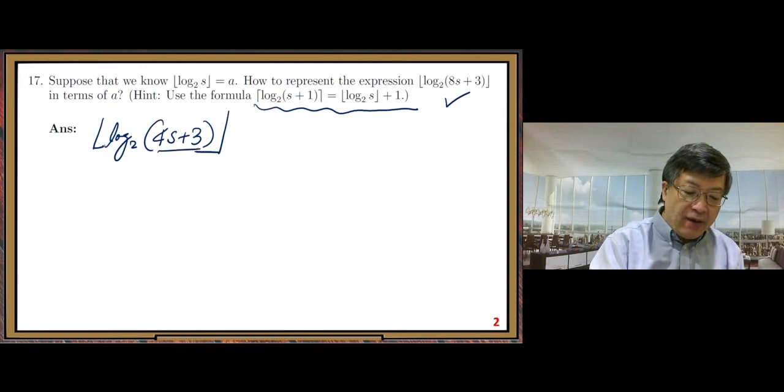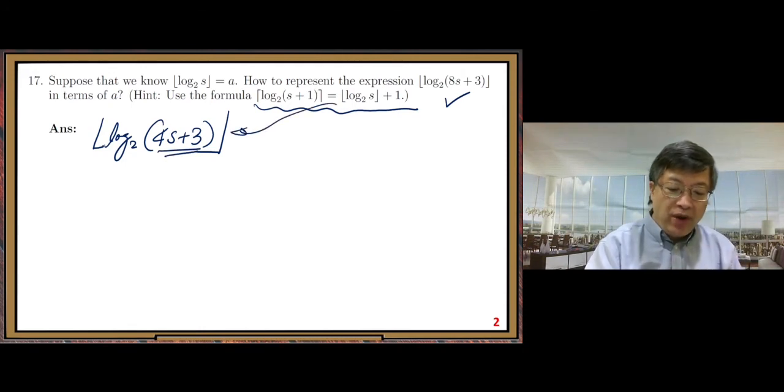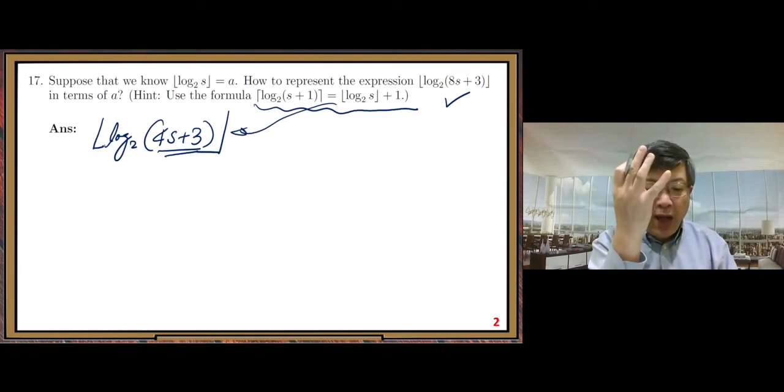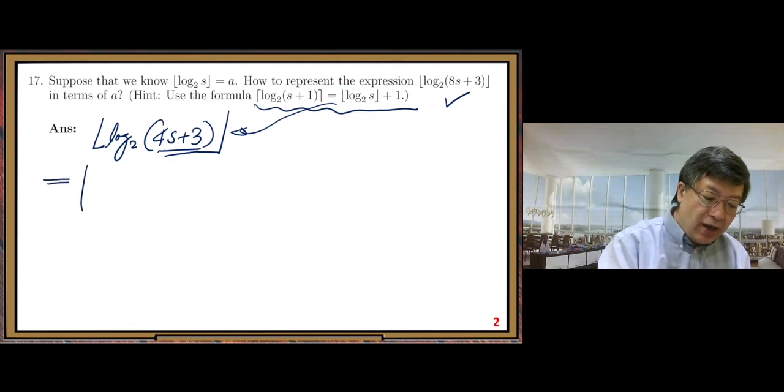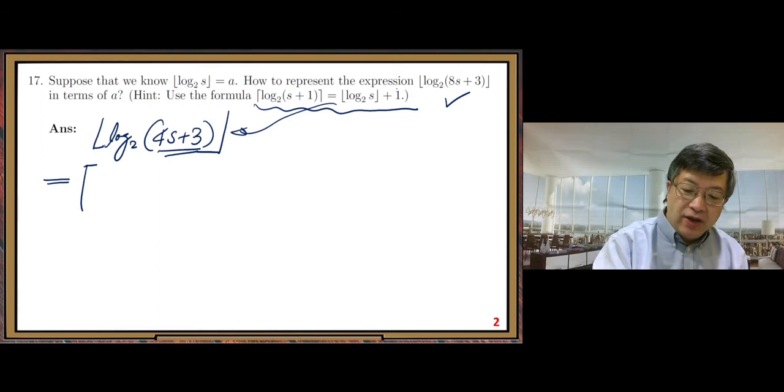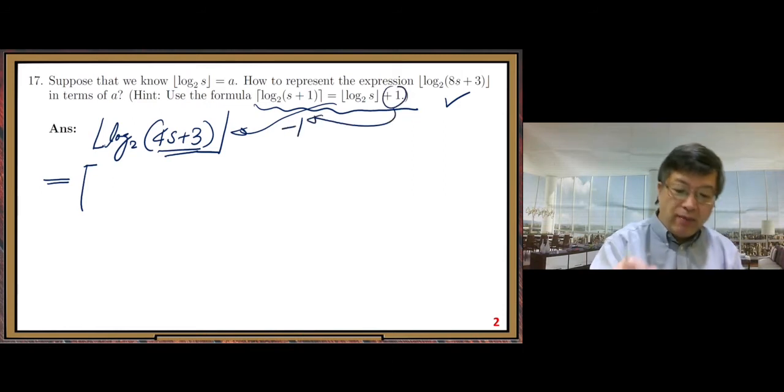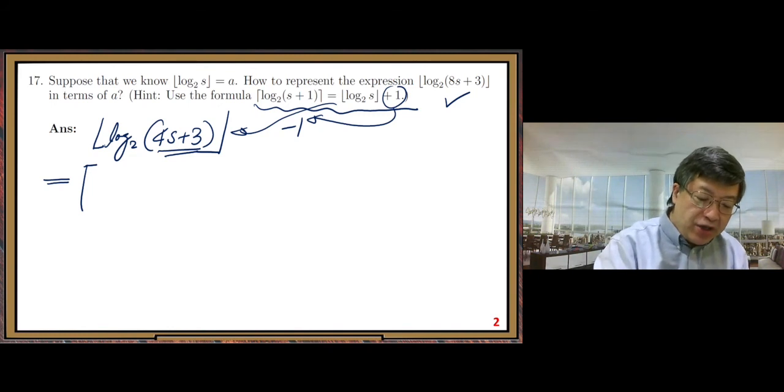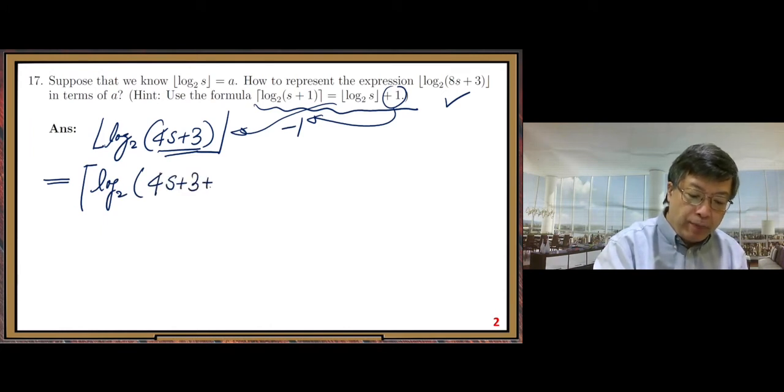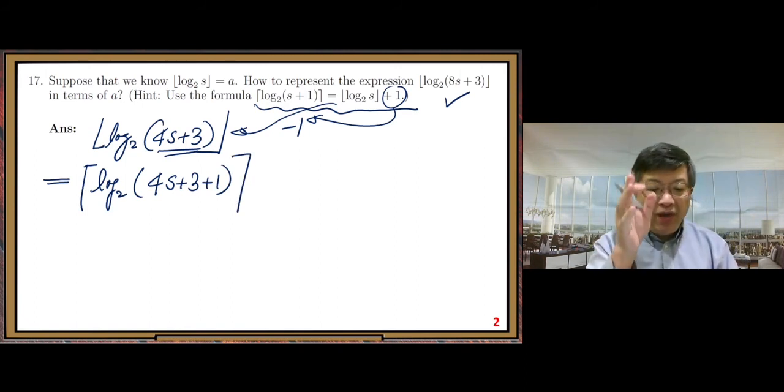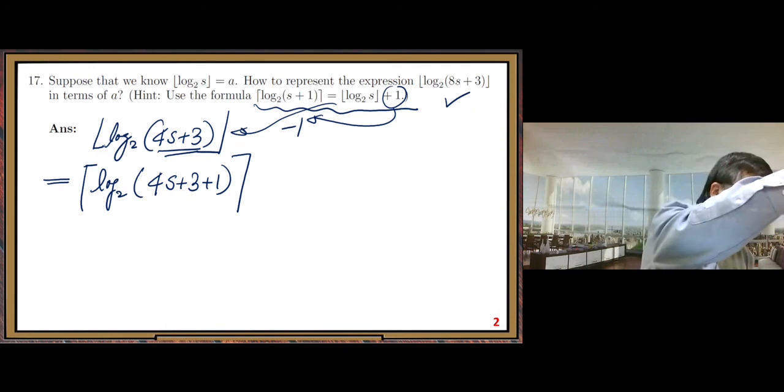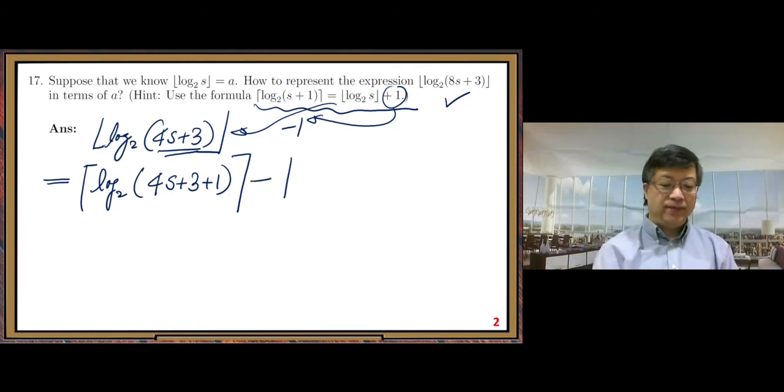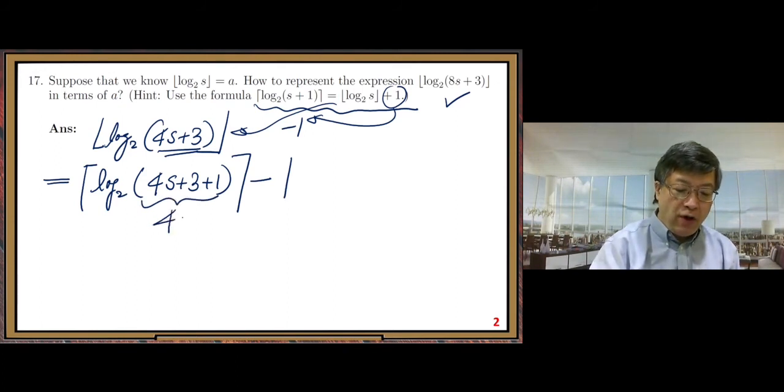So now we want to apply this formula. But when we apply it, we treat the parenthesis whole thing as one number. So now we can write ceiling function. Because this plus 1, we want to write minus 1 at the left-hand side. Subtract 1 both sides. So the ceiling function of log base 2 of 4s plus 3 plus 1. Now, whatever number in the parenthesis, we add one more on top of it, minus 1. So this number 4s plus 4, that is 4 times s plus 1.